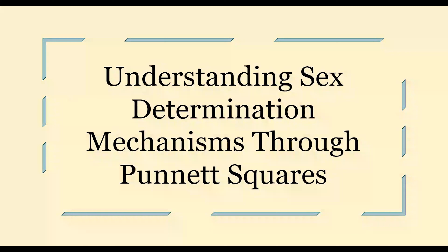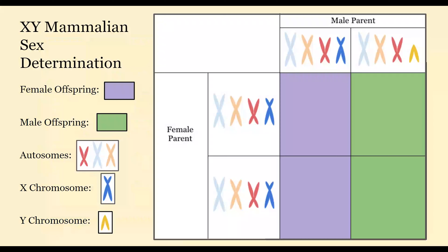Hello, my name is Cadence and in this video I'm going to break down the different mechanisms of sex determination using Punnett squares. We're going to start off with the one you're probably most familiar with, which is XY mammalian sex determination, but before we do I want to talk about the key. In each of these Punnett squares you're going to see purple boxes to indicate which offspring is female and green boxes to indicate which offspring is male.